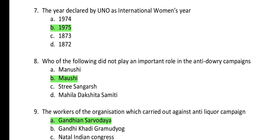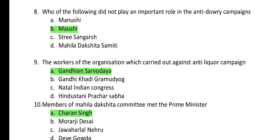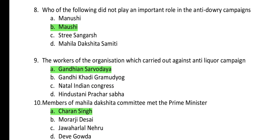Question 7: Which year was declared by the UNO as International Women's Year? The answer is B — 1975. The year 1975 was declared by the UNO as International Women's Year.